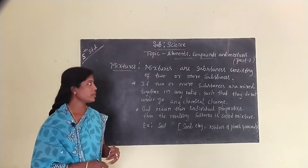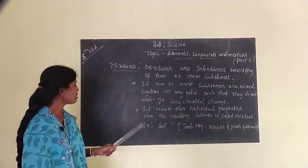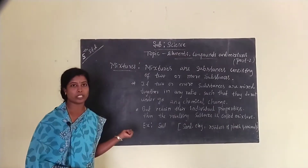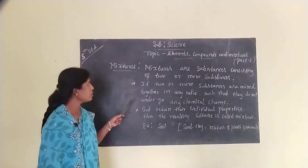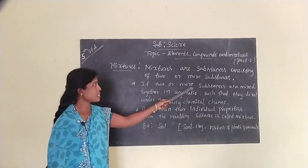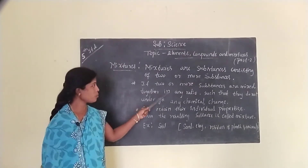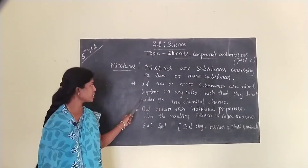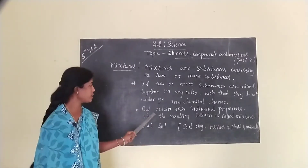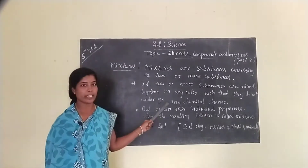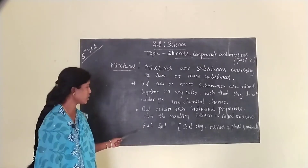Today we will learn about mixtures. I will give you one best example for mixture: that is fruit salad. In fruit salad, so many fruits are mixed together. Mixtures are substances consisting of two or more substances mixed together in any ratio such that they do not undergo any chemical change but retain their individual properties.